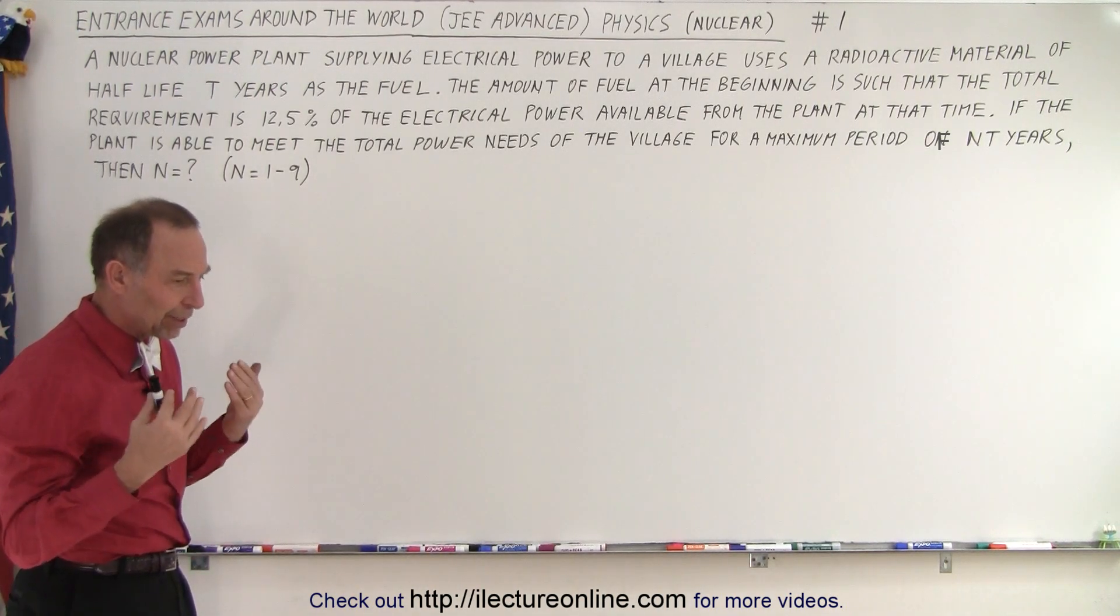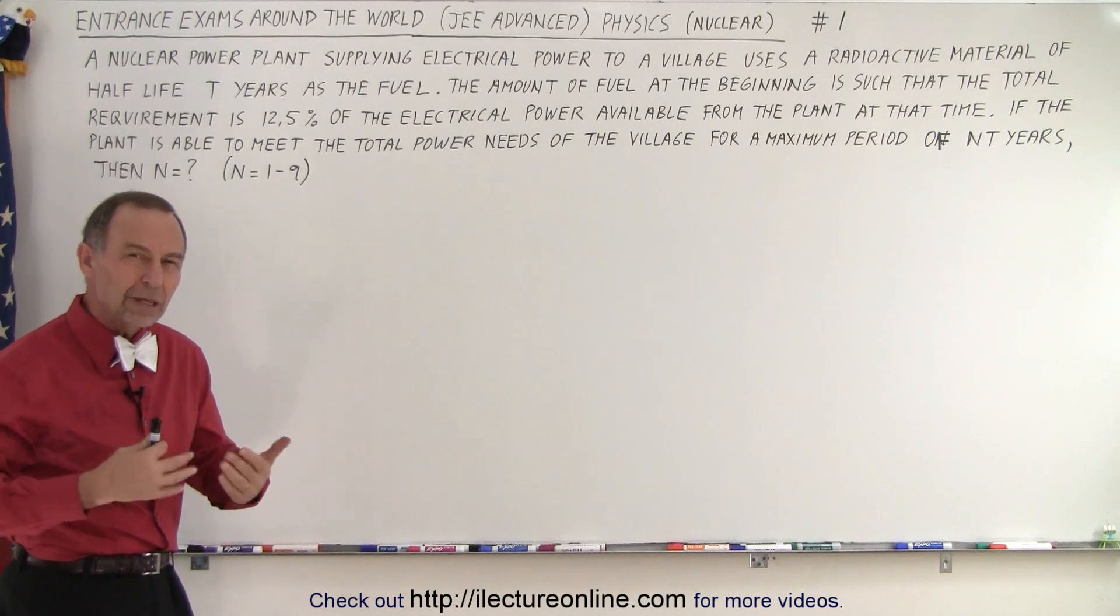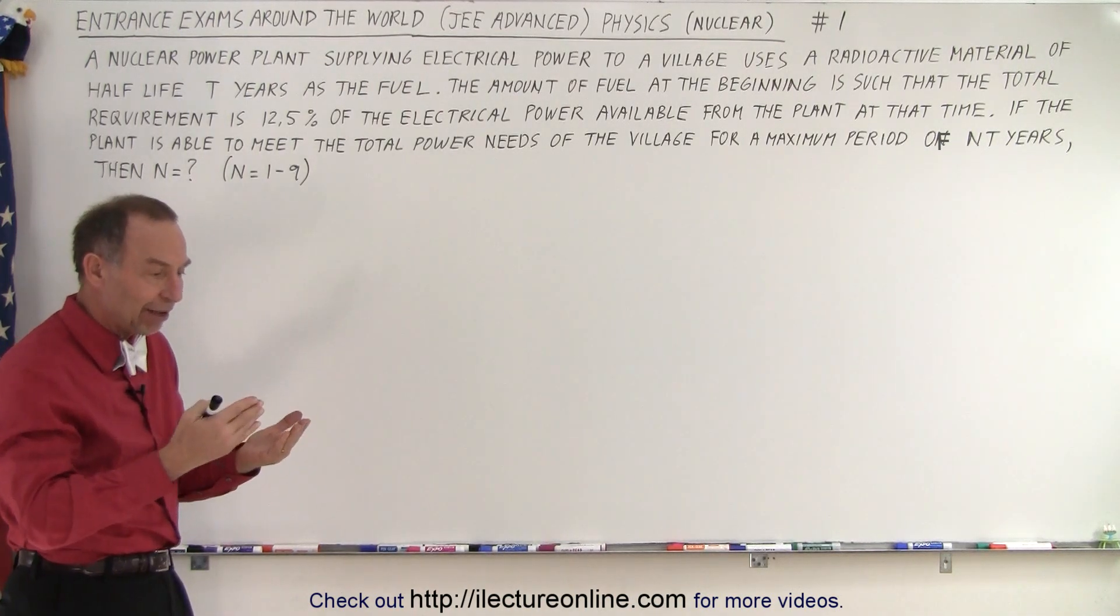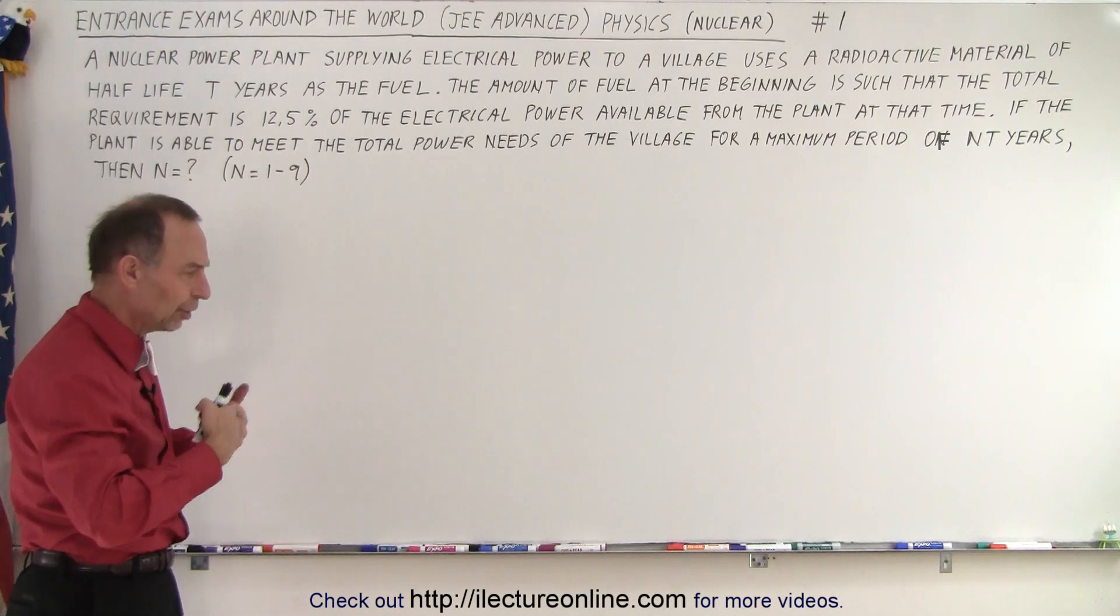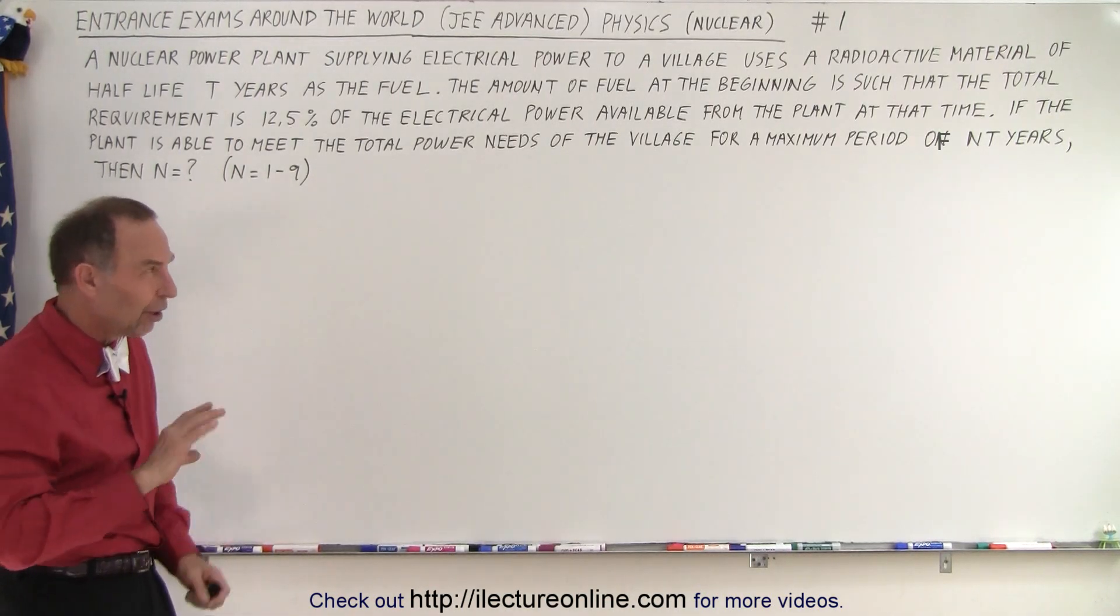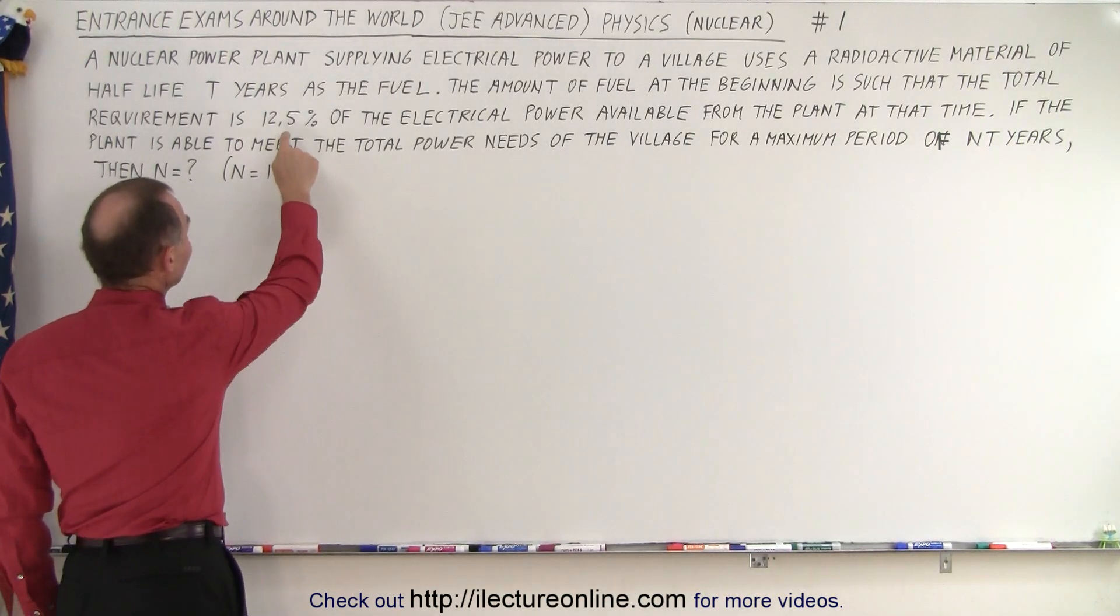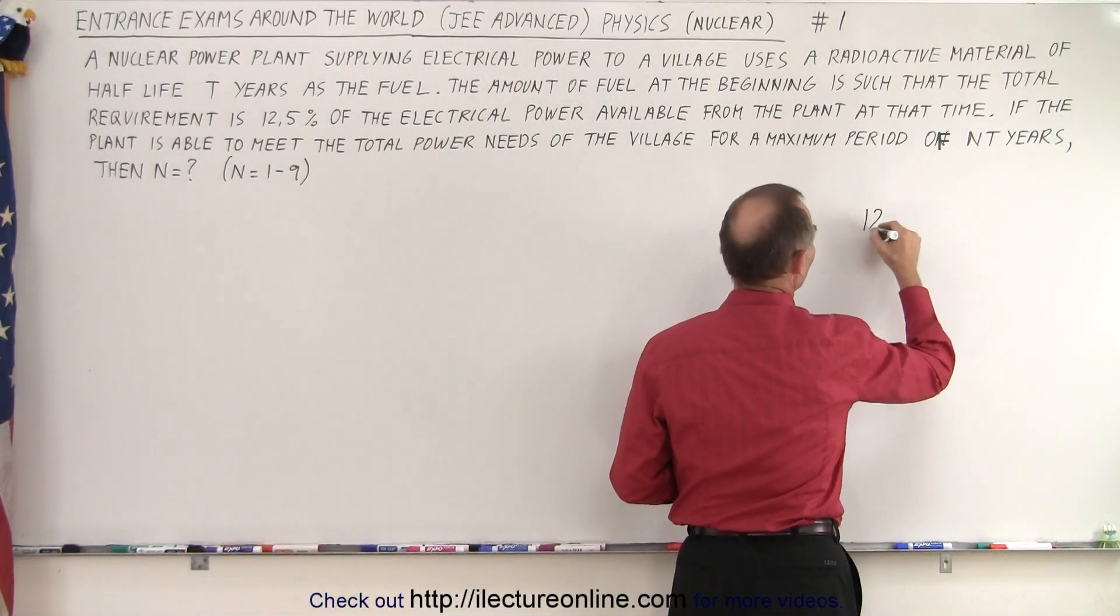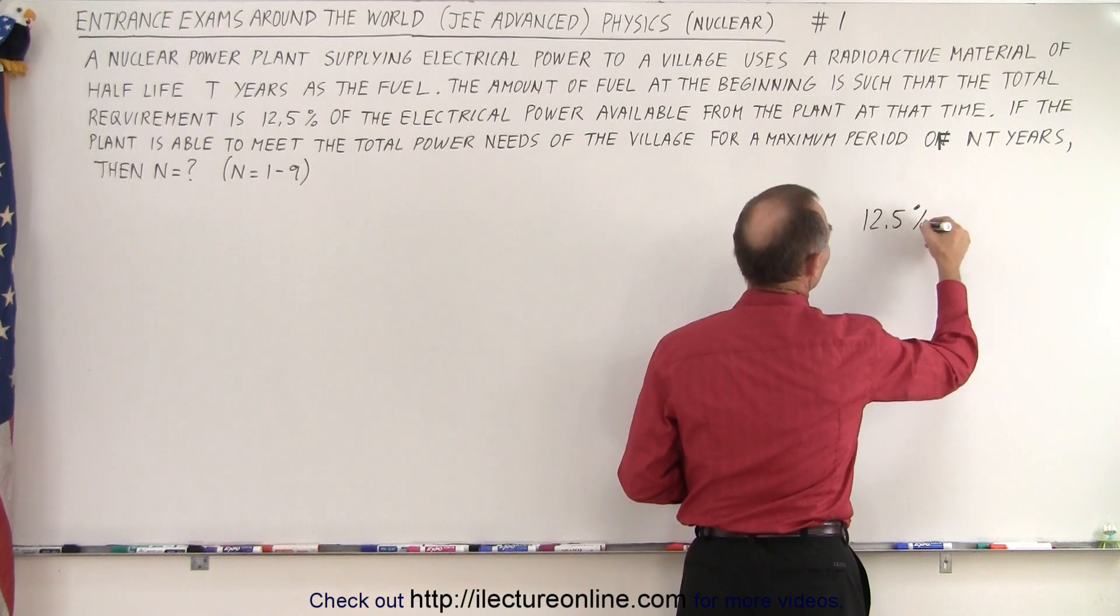Here we realize that as the fuel is being used up it goes through its half-life, so after one half-life there's only half the fuel left, after another half-life there's only a quarter of fuel left. Right away we realize that 12.5 percent is essentially one out of eight, so 12.5 percent equals one over eight.